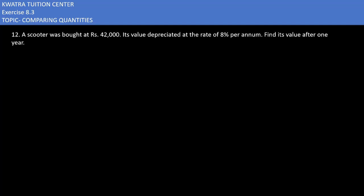Let's start with the 12th one. It says a scooter was bought at rupees 42,000. That means this is the principle you have.